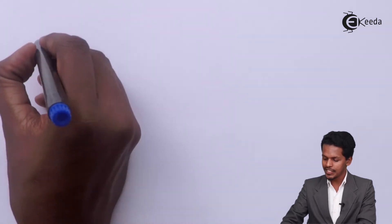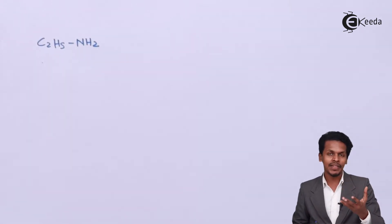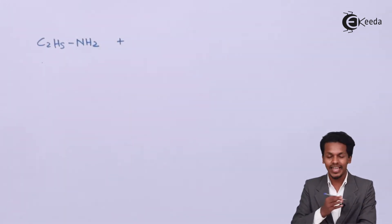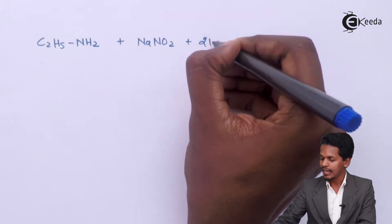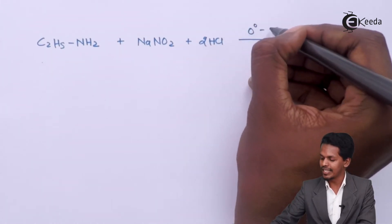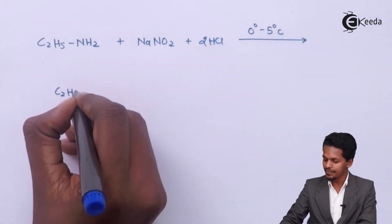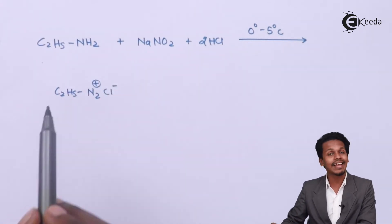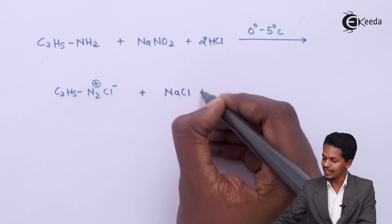For the example, consider C2H5-NH2, that is ethanamine. Methanamine is not used because it is not reactive with nitrous acid. The reaction uses NaNO2 with 2 moles of HCl at 0 to 5 degrees Celsius. The product is C2H5-N2Cl, ethyl diazonium chloride, with NaCl and 2 moles of H2O as byproducts.